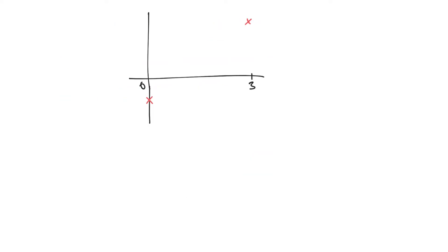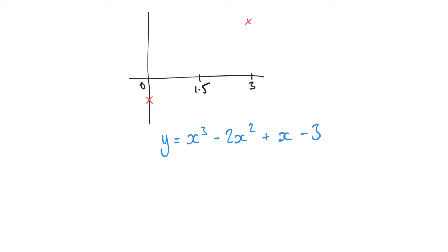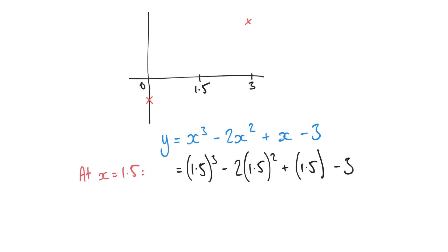At this point, the term bisection comes into play. We're going to bisect the range of 0 to 3. We're going to take the midpoint, which is 1.5 in this instance, and evaluate the function again at that midpoint. So we have y equals x cubed minus 2x squared plus x minus 3, and substituting 1.5 gives us a result of minus 2.625.